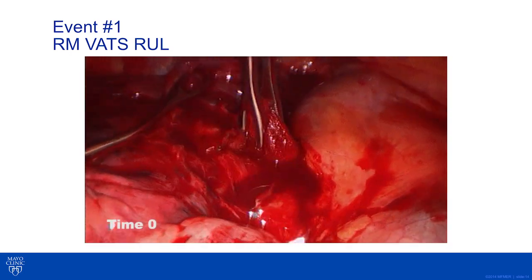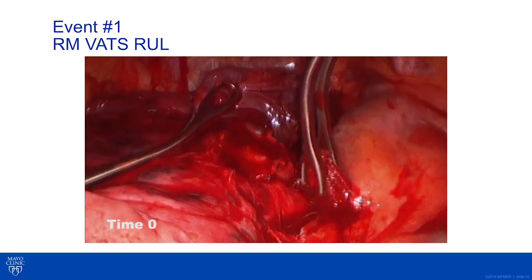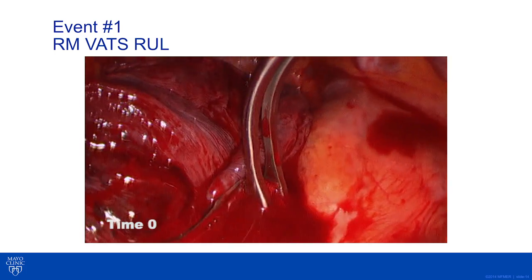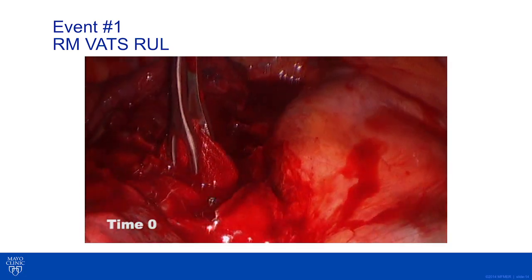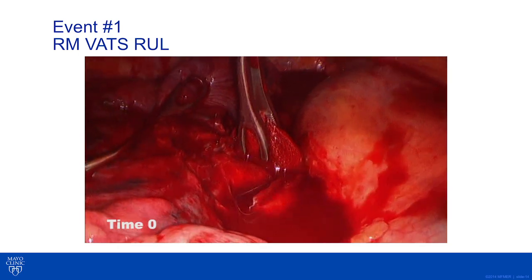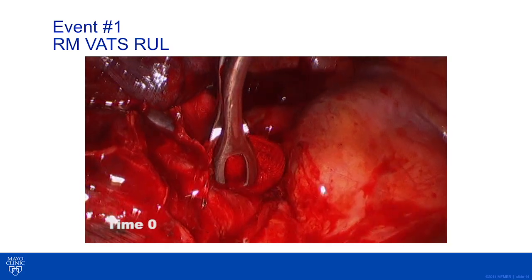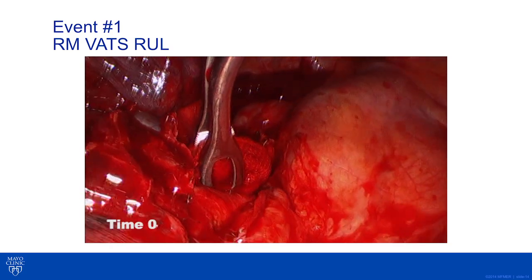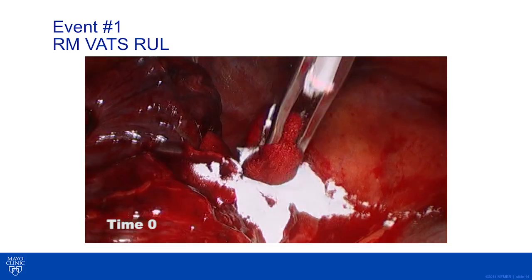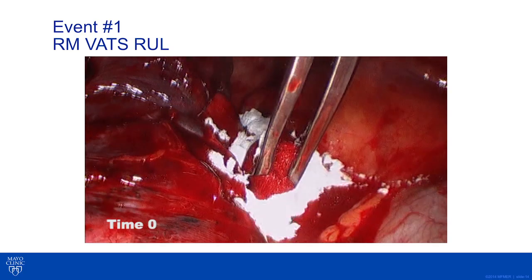A ring clamp was used to apply direct pressure, but this was not adequate. Therefore, a sponge stick with a tonsil sponge on the tip of a ring clamp was used, successfully allowing the team to acquire the necessary supplies to manage the emergency. Blood was brought into the room, anesthesia was notified, and a topical coagulant — Arista — was applied. Direct pressure with a small bulky sponge combined with the topical coagulant allowed safe acquisition of hemostasis.